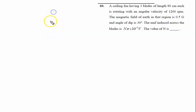A ceiling fan has 3 blades of length 80 cm each. Length of the blade is 80 cm, so 80 by 100 meters.